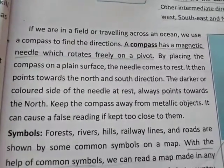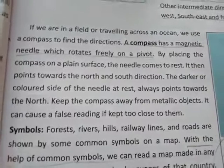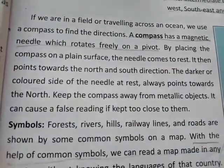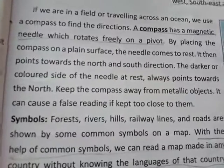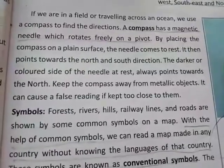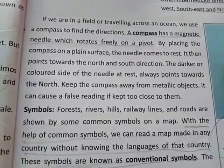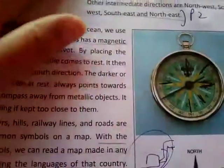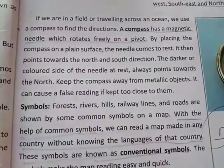A compass has a magnetic needle which rotates freely on a pivot. By placing the compass on a plain surface, the needle comes to rest — it stops moving and becomes stationary. It then points towards the north and south direction. The darker or colored side of the needle at rest always points towards the north.